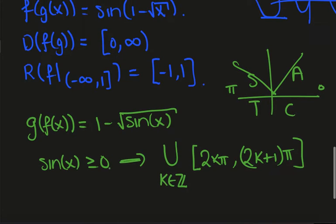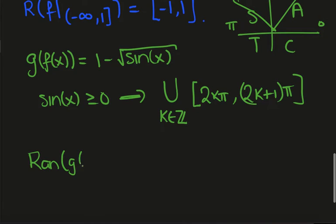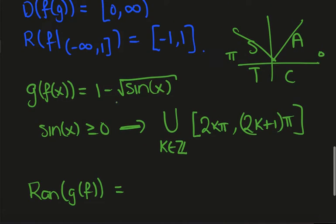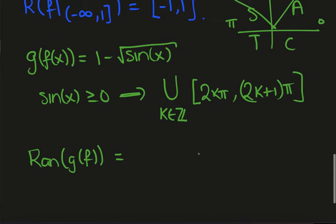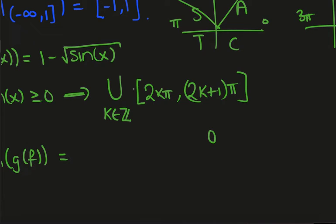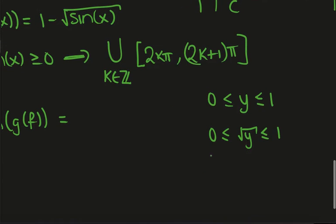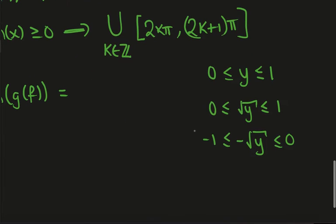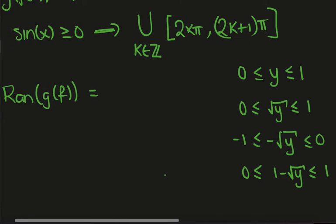That's the domain of the composite. For the range of g∘f — we have 1 - √(sin x), and sin x only outputs values between 0 and 1. Let y denote those outputs, so 0 ≤ y ≤ 1. Square-rooting: 0 ≤ √y ≤ 1. Multiplying by -1 and adding 1: we get 1 - √y lies in [0, 1]. So the range of the composite is [0, 1].